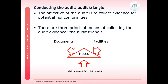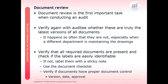An important part of conducting an audit is the audit triangle. The objective of an audit is to collect evidence for potential nonconformities. We have three primary methods of doing that — the audit triangle. We review documentation or documents, we review the physical facilities themselves, and we interview and question core people within the data centre. We take audit notes or findings. One of the most important tasks is doing documentation review, so we need to ensure that the documents we are reviewing are the latest versions.